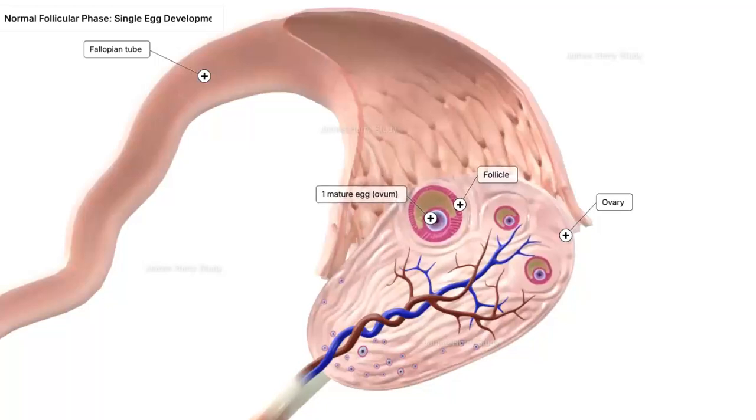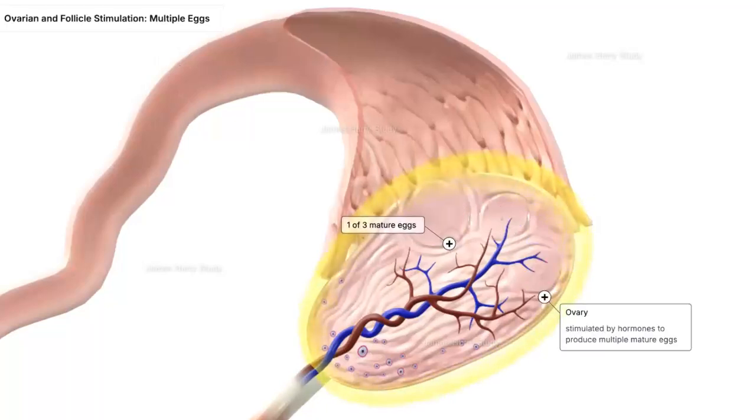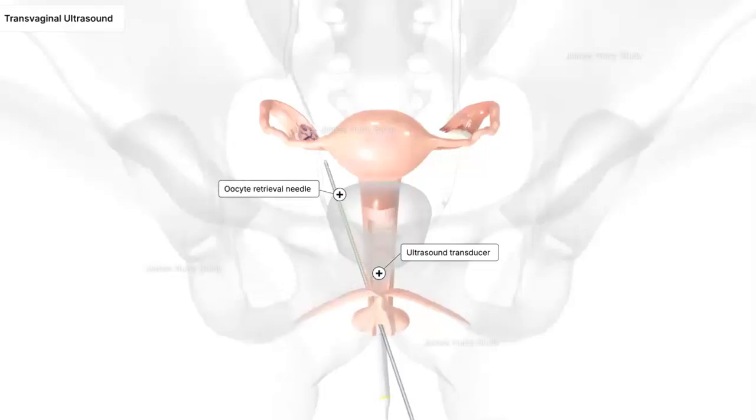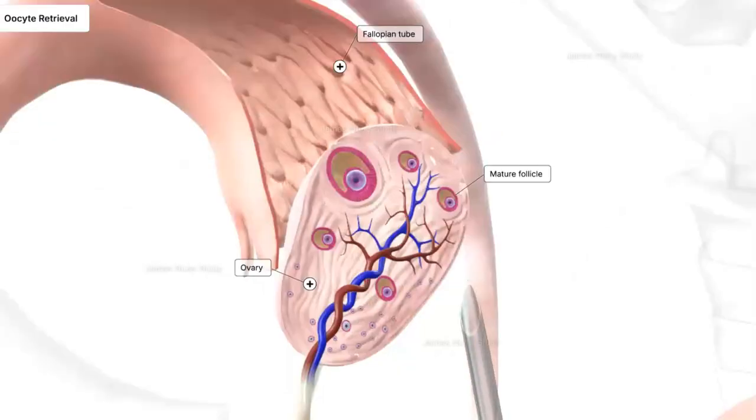Step 2 is the egg retrieval. When the follicles reach the proper size, egg retrieval is carried out by first inserting a transvaginal ultrasound probe to visualize the ovaries in real time, then guiding a thin aspiration needle through the vaginal wall into each identified follicle. Once eggs are located, the doctor applies gentle suction to retrieve the mature eggs.